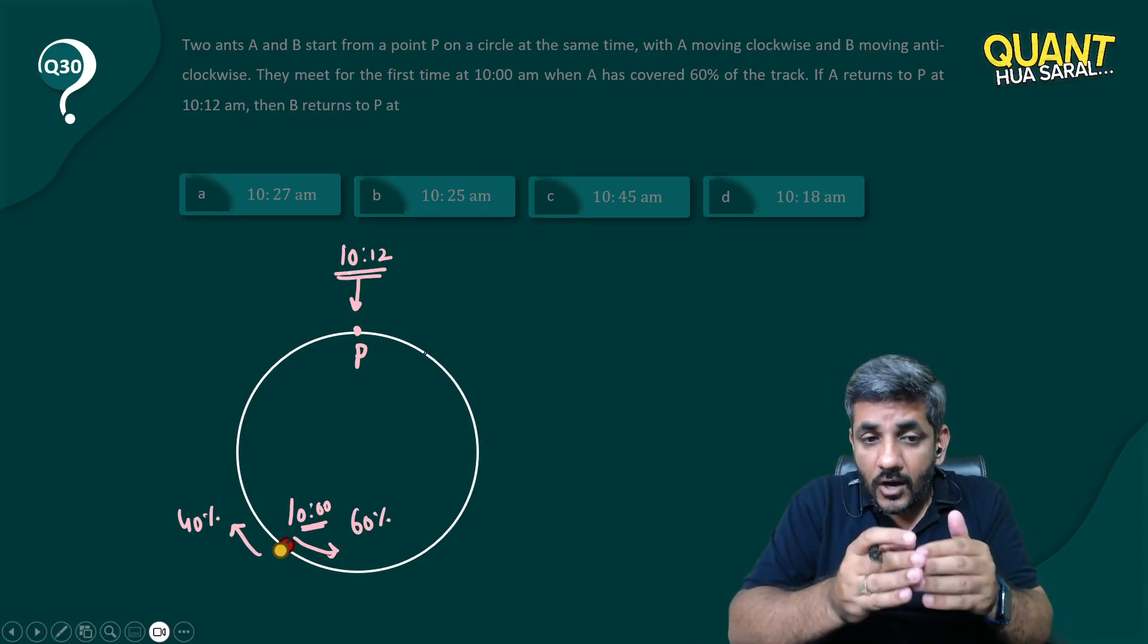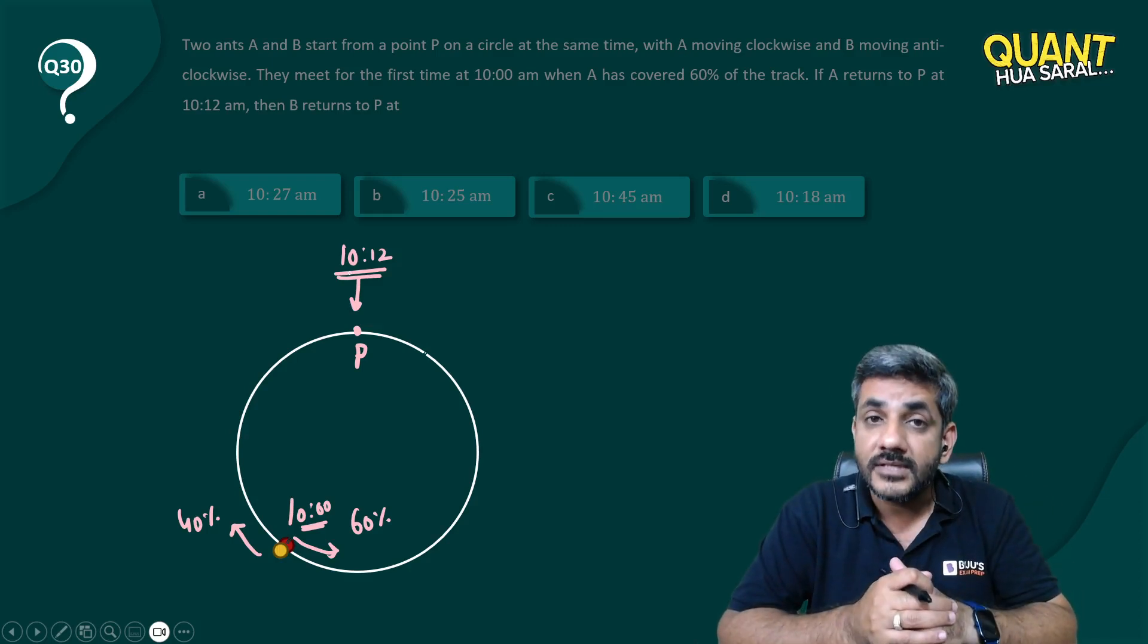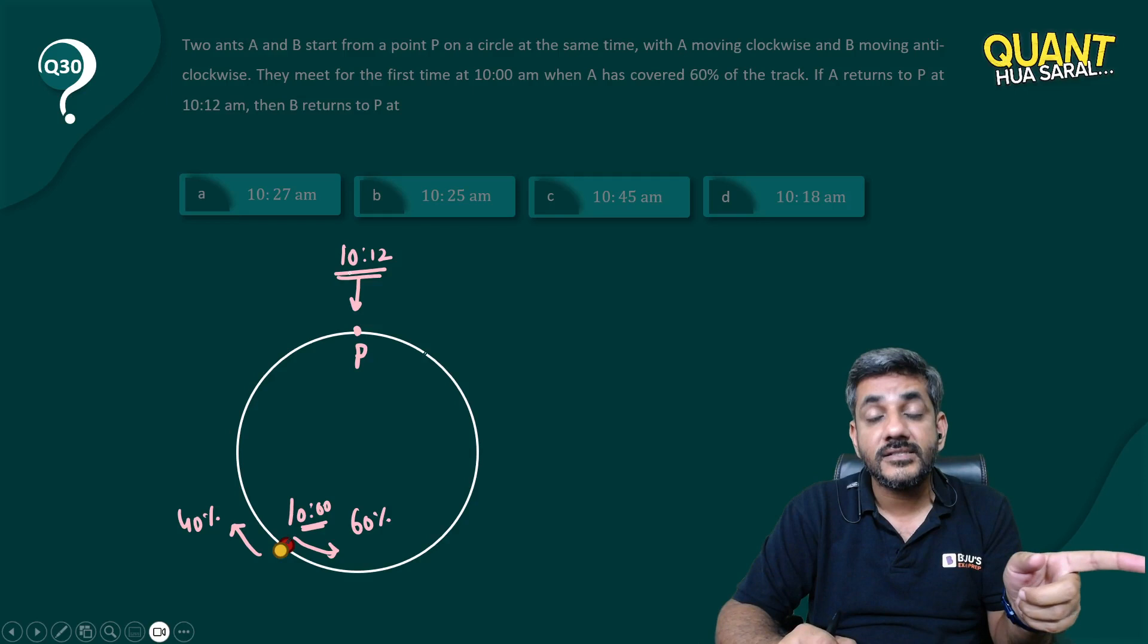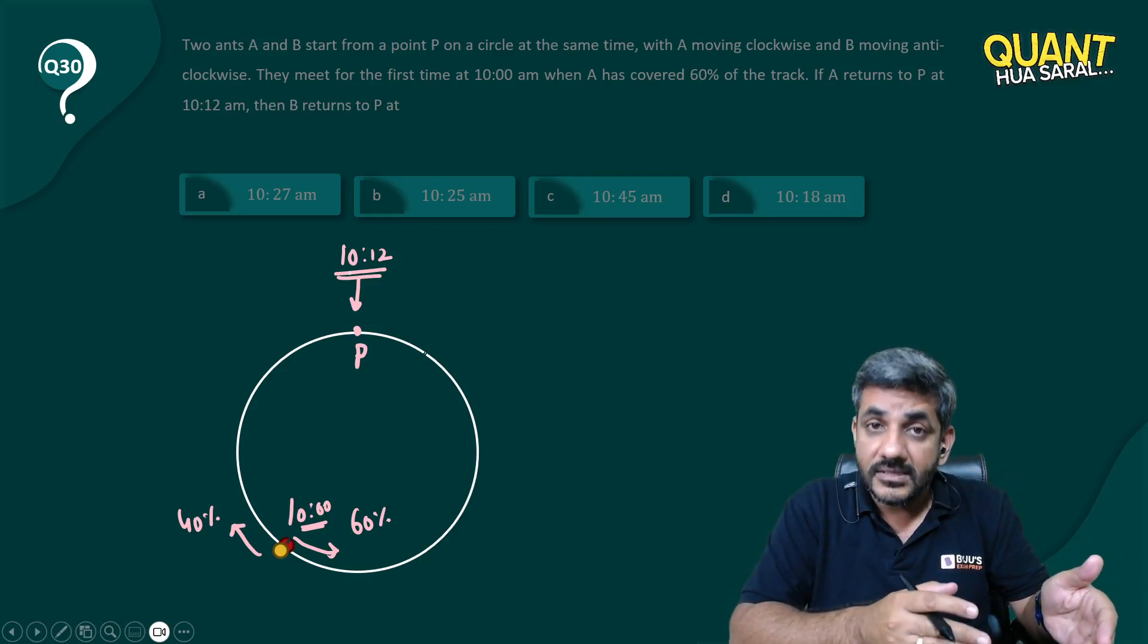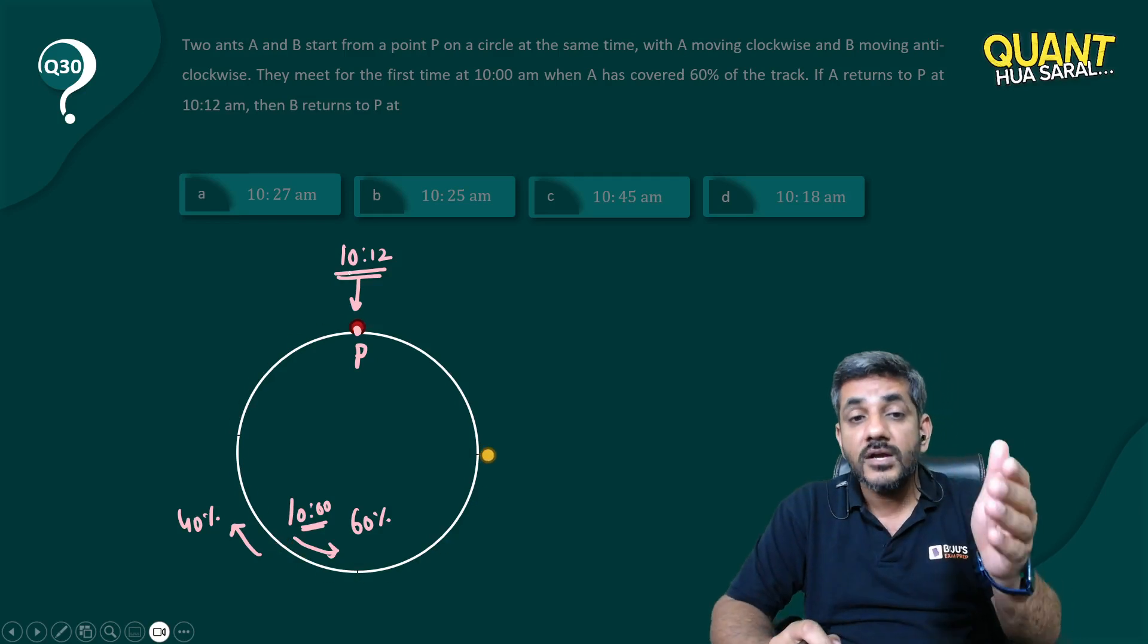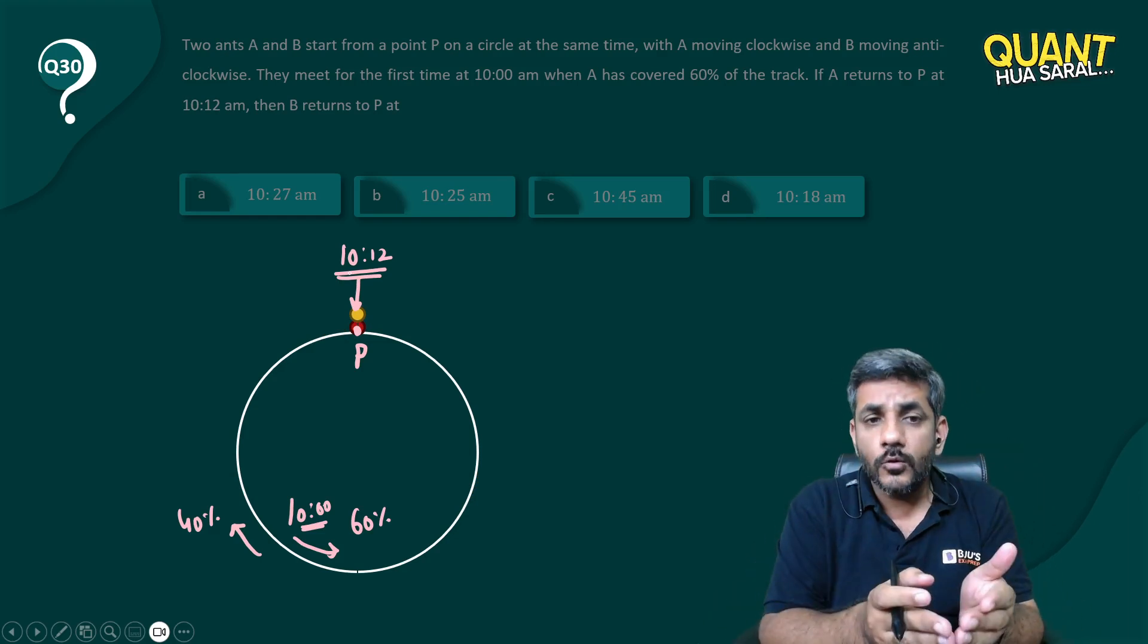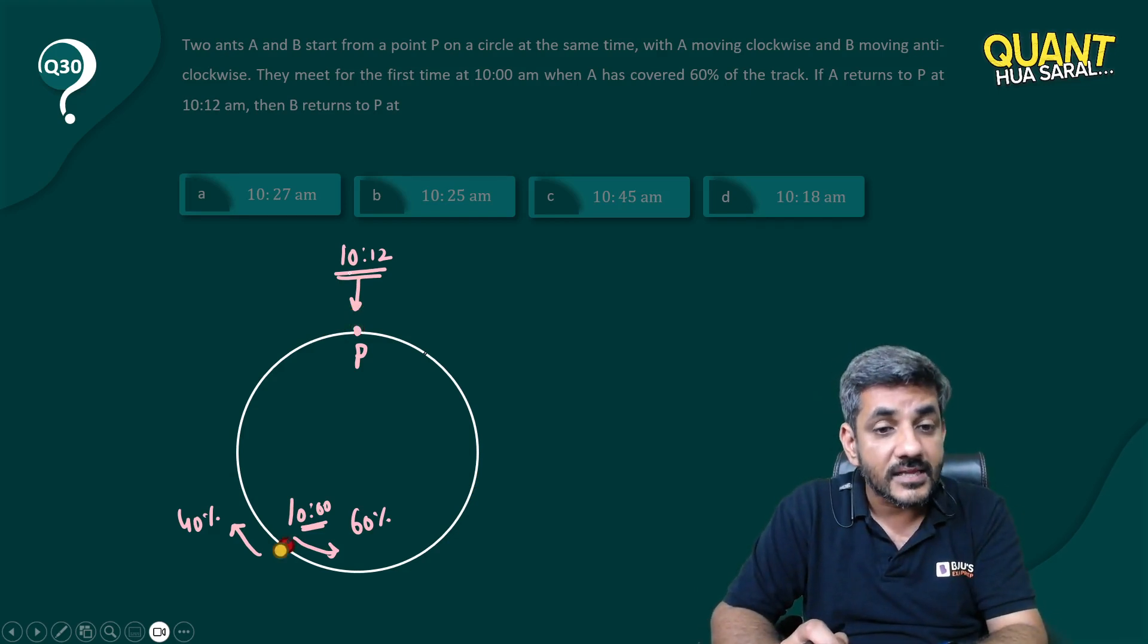Now when they move ahead from this particular point, A just has to cover that remaining 40%, B has to cover 60%. The faster ant has to cover lesser distance, so it is now going to take even less time. Now if they move, the red one would reach P, but the yellow one would take a lot of time because first of all the yellow one is slower, plus it is also going to cover more distance.